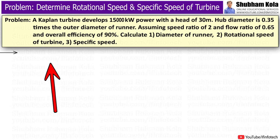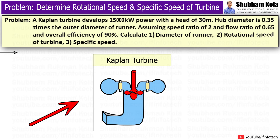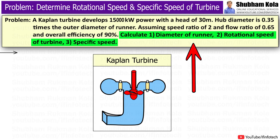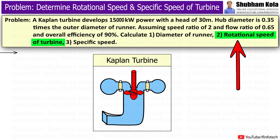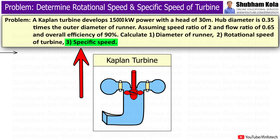In this video, we are going to solve a problem based on a Kaplan turbine, where we will calculate the diameter of the runner, rotational speed of the turbine, and specific speed of the turbine.